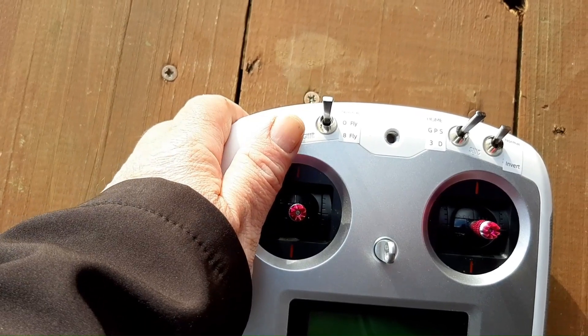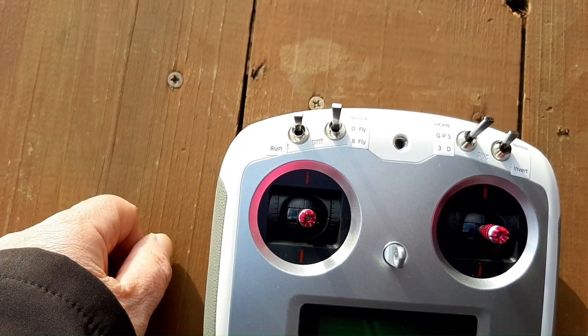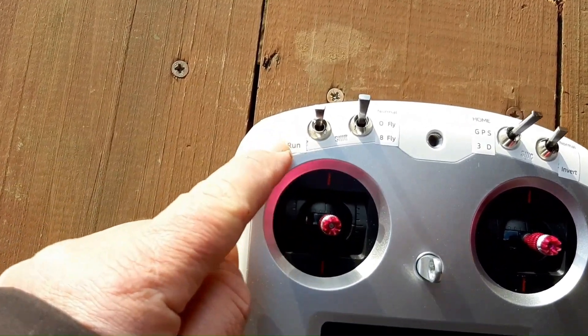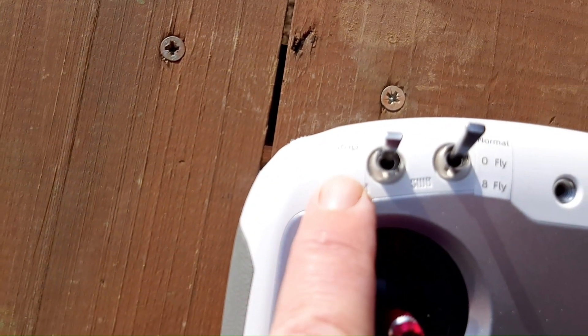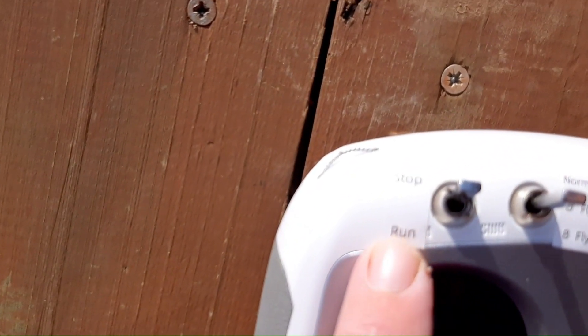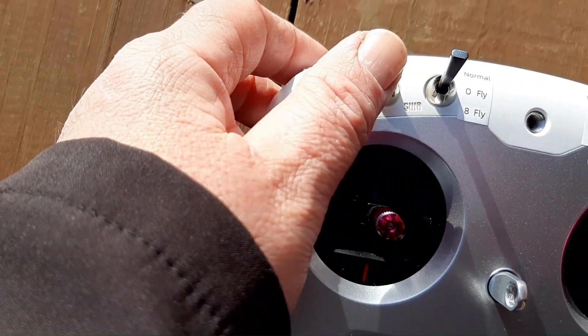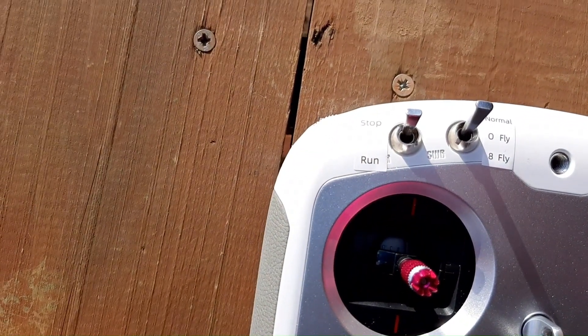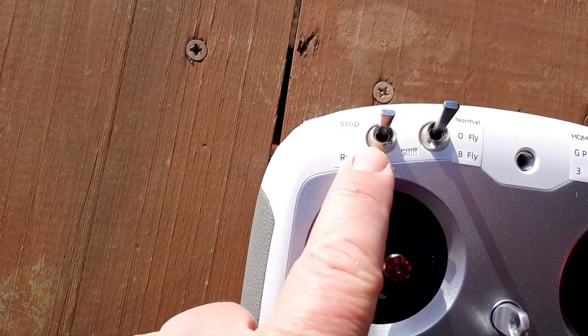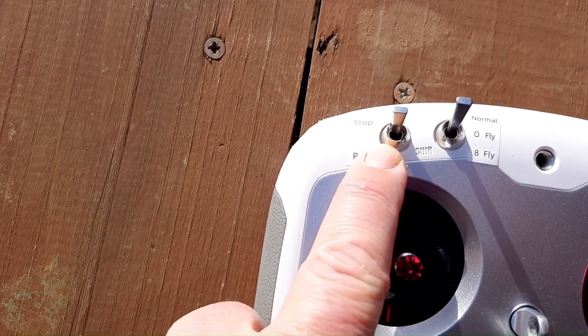As you can see, this switch is for stop and run. Basically, by pushing that forward, I switched the heli off during flight, and this is why it dropped.